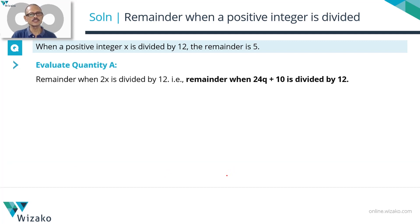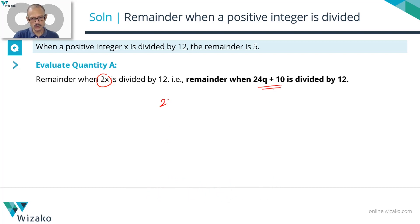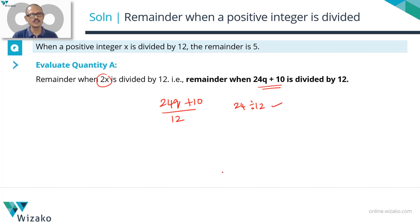Now let's evaluate Quantity A: the remainder when 2x is divided by 12. We deduced that 2x equals 24q + 10, so we need the remainder when 24q + 10 is divided by 12. Notice that 24 is divisible by 12.